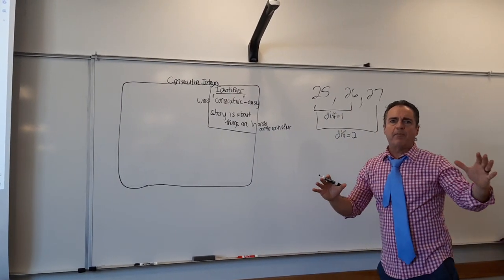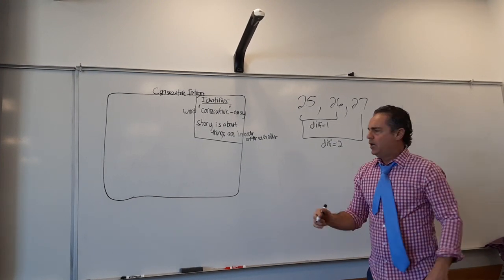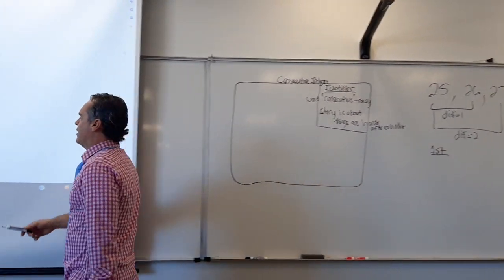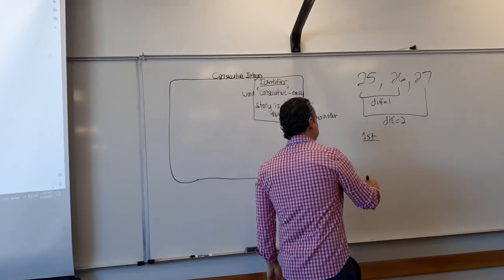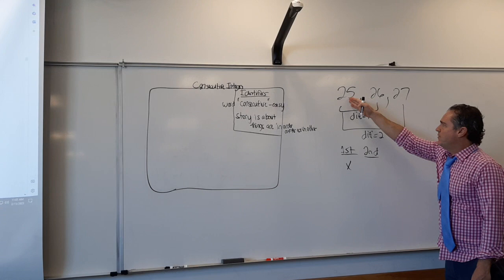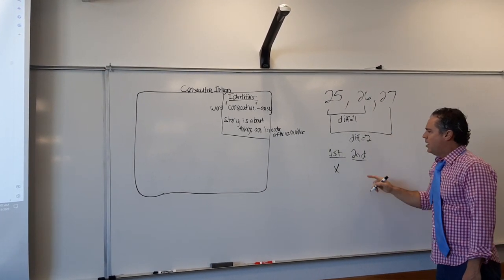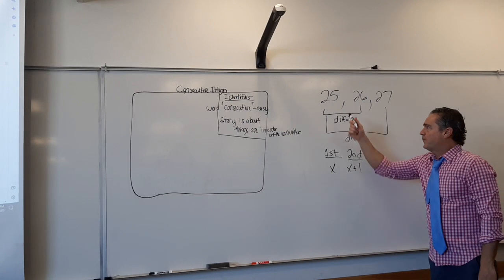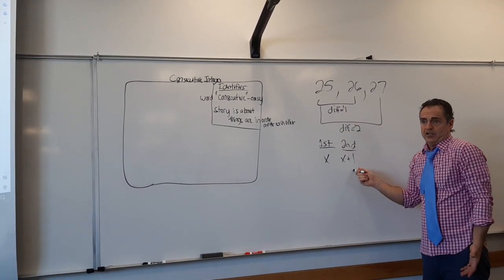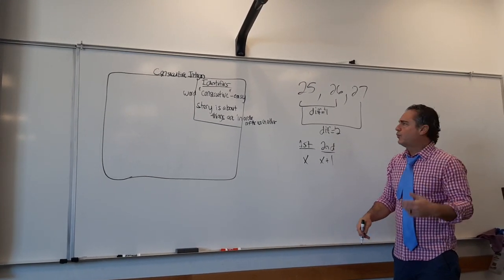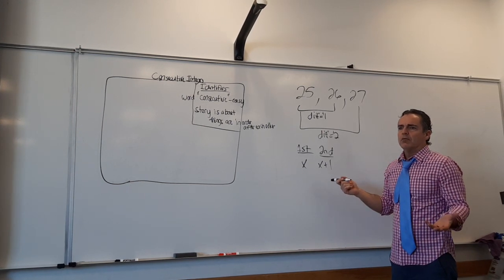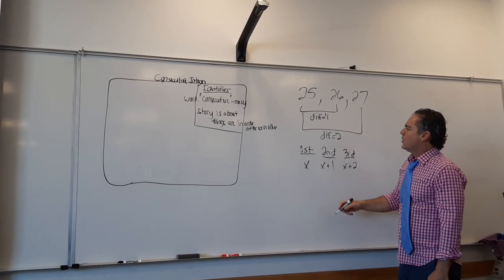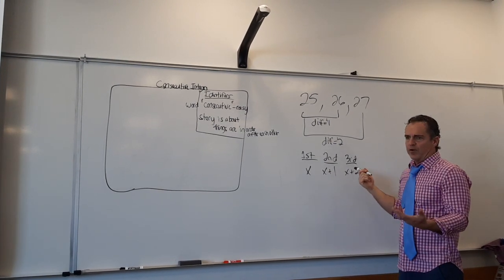If the difference between consecutive integers is always one, then the second is x plus one and the third is x plus two. Think about it: if the first is 25, then 25 plus one is 26, and 25 plus two is 27. Pick another number — 43. 43 plus one makes 44. 43 plus two makes 45. So here: x, x plus one, and x plus two. That's what you write right here.